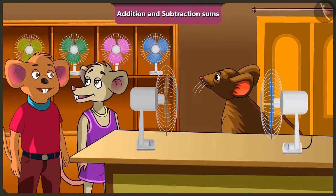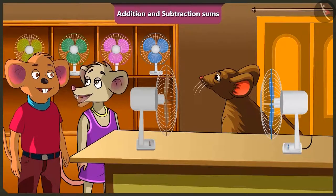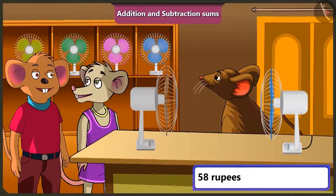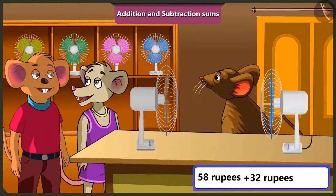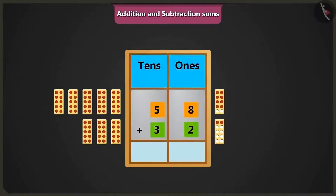Don't worry Choo Choo. I will talk to the fan seller. Brother, how many rupees would you give for this old fan? I will give 32 rupees for this old fan. Look Choo Choo, you have 58 rupees now, and you will get 32 rupees for this old fan. So total, how many rupees would you have? To know that, we would have to do the addition of 58 and 32.